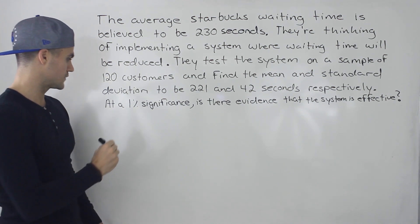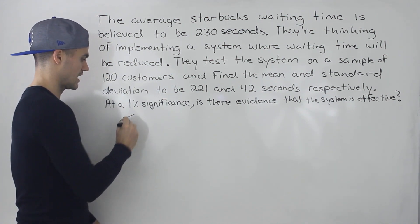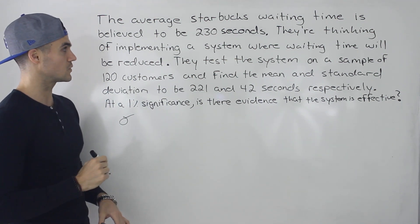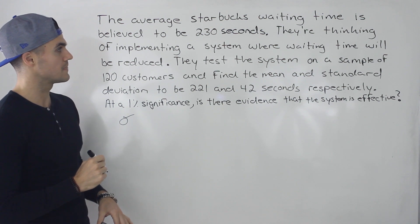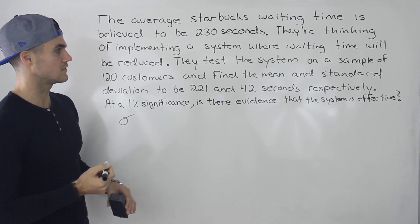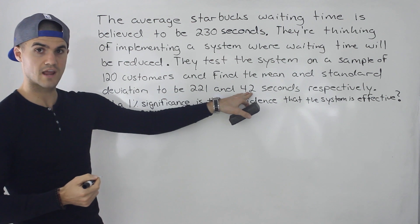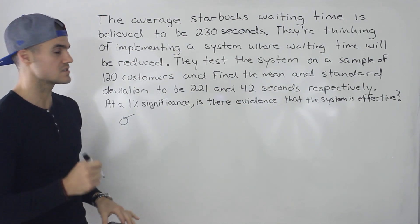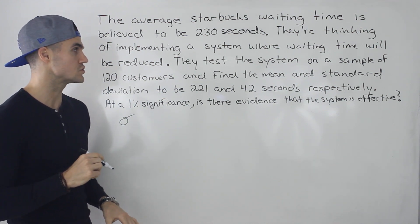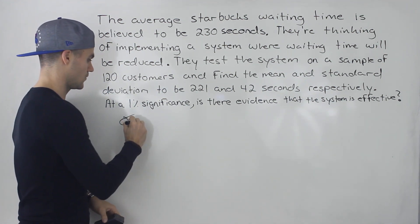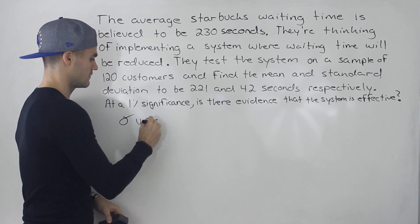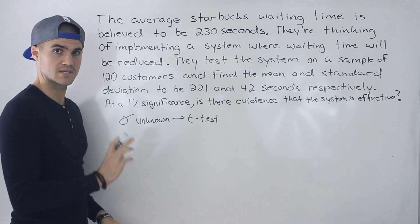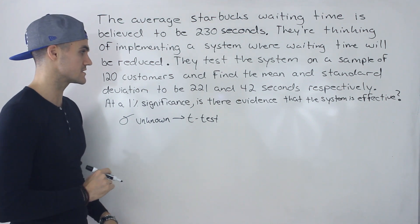First thing: is the population standard deviation known or unknown in this case? Notice that we're not given the population standard deviation — we're given the sample standard deviation, 42 seconds, but nowhere in the question is the population standard deviation shown. So the population standard deviation is unknown, meaning we're going to be doing a t-test and using a t-distribution versus a z-distribution.